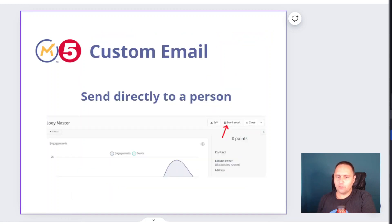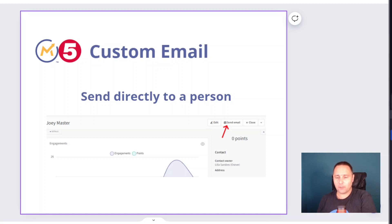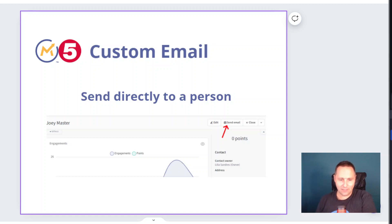Another way is to send an email directly to a person. You would open the person's profile inside Mautic 5, click on the send email button, and then the email goes out right away.